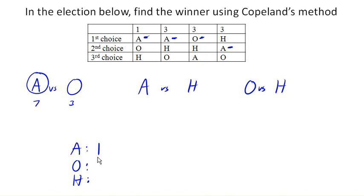So next we're going to compare A versus H. In A versus H, these people prefer A, prefer A, prefer A, prefer H, prefer H. And so 6 people prefer H, 4 people prefer A, and so H is preferred here. H earns a point.